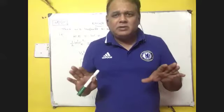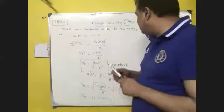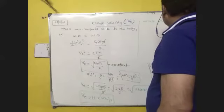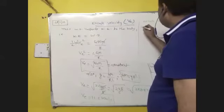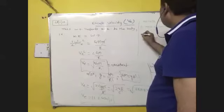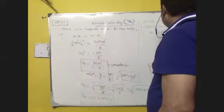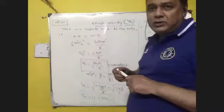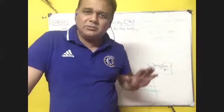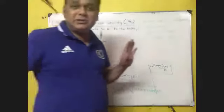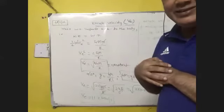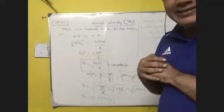Escape velocity is independent of the mass of the body. Therefore, escape velocity is constant for everybody. Escape velocity is 11.2 km per second and it is constant for everyone. There is no change.